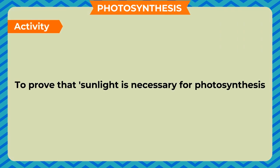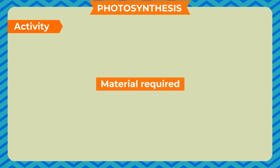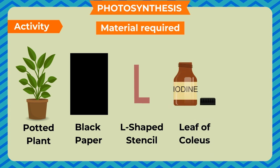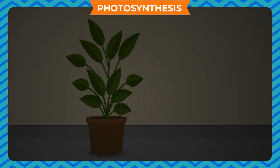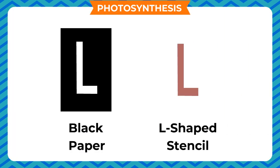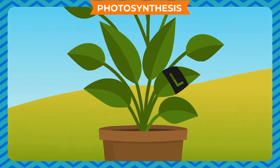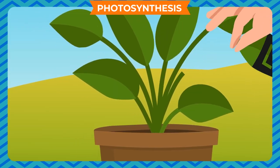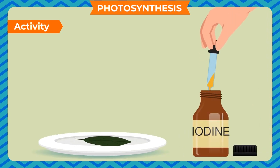Activity to prove that sunlight is necessary for photosynthesis. Materials required: a potted plant, black paper, an L-shaped stencil, iodine solution, and a dropper. Method: take a potted plant and keep it in the dark for four days. Cut an L-shape in black paper using the stencil and cover one leaf with it. Leave the setup in sunlight for six to eight hours, then detach the leaf and perform an iodine test for the presence of starch.